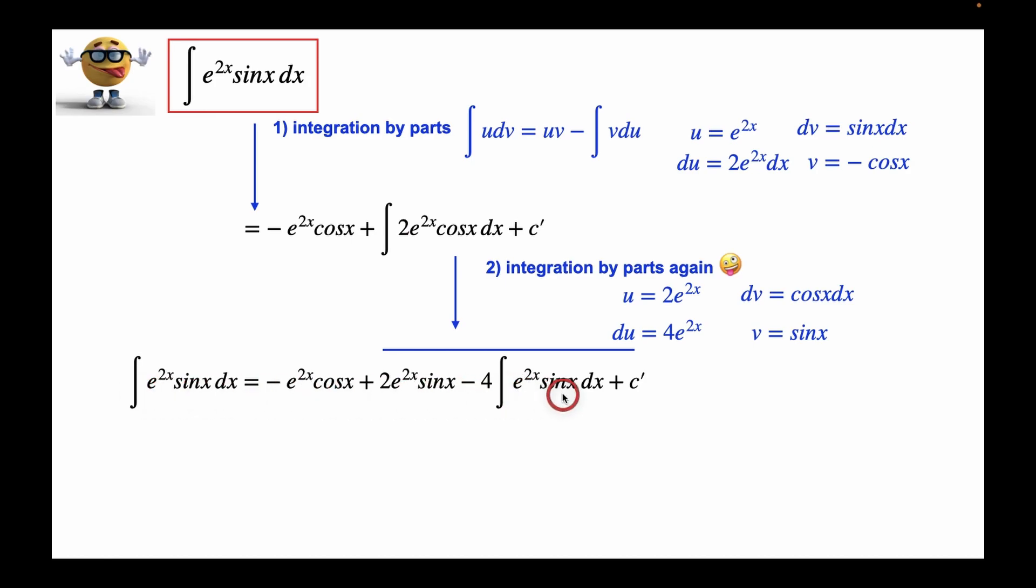And if we look at this closely, like check this out, we're going to take this term and combine it with this term, and we get this. And now to solve for this integral, all we do is divide by 5.